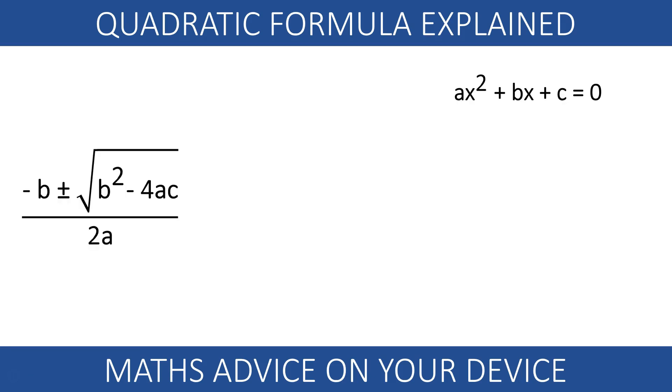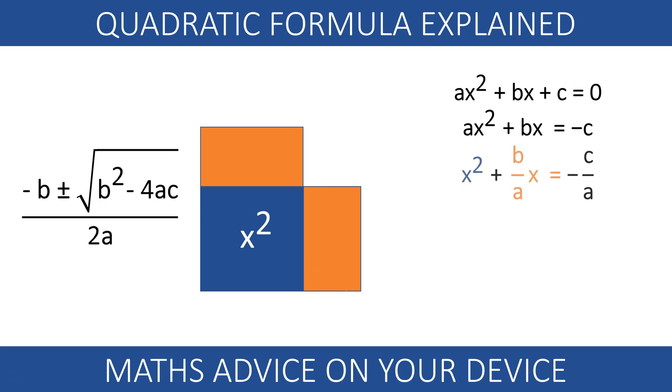We can use the same idea to visualise the solutions of the quadratic equation ax squared plus bx plus c equals 0. We park the number c to the other side of the equation. We can use a square of area x squared. For that, we must divide by the coefficient a.